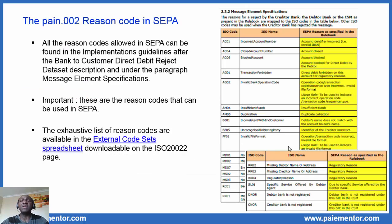A reason code tells us why a transaction, an instruction, or a message was rejected. In SEPA implementation guidelines documents, only the reason codes allowed in SEPA are listed. For the SDD, you find them after the bank-to-customer reject direct debit data set description, under the paragraph message element specifications. The reason codes listed there are a subset of all possible reason codes in the ISO 20022 standards. The exhaustive list of reason codes is available in the external code set spreadsheet, downloadable from the ISO 20022 website. In the video about the PACS 4 and the SET schemes, you can see how to access that list.